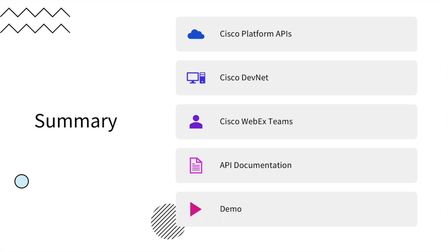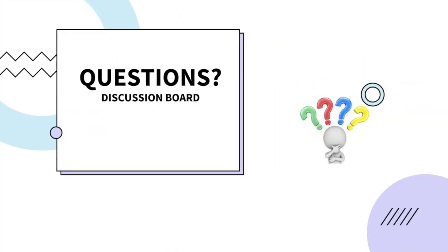In summary, we've gone over Cisco platform APIs. We've covered Cisco DevNet — what it is and how it's a great resource to continue learning about these next-gen networking solutions and technologies, which are growing fast. I highly recommend getting in there, walking through a couple labs, finding your interest area, and keeping your skills up to date. We've covered Cisco WebEx Teams and did a webhook demonstration. We've covered API documentation — where to get it and how it's basically mandatory for making a request. And we've done a demo of making an API call to the Cisco DNA Center always-on sandbox to retrieve a token and use that token on a follow-on request. If you have any questions please direct them to the discussion board.